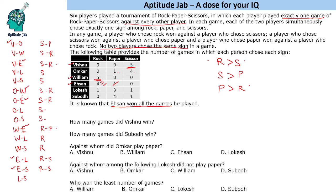Next we look at Subod, who has four paper and one scissors. Subod cannot play scissors against Vishnu since both can't pick the same sign, so Subod plays paper there. Similarly, another game also forces paper. We already know one game where Subod plays scissors. The remaining games for Subod are all paper.